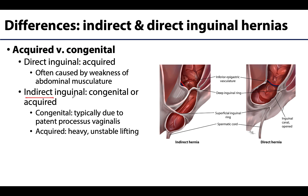Indirect inguinal hernias can be congenital, as just mentioned, but can also be acquired — caused by weakened fascia around the deep inguinal ring. Straining with heavy or unstable lifting, for example, can cause herniation through the deep inguinal ring and sometimes expansion or change in shape of the deep inguinal ring. Direct inguinal hernias are always caused by an acquired weakness of the posterior wall of the inguinal canal, specifically within the inguinal triangle.